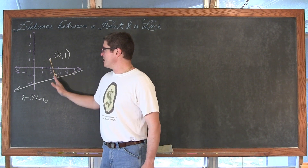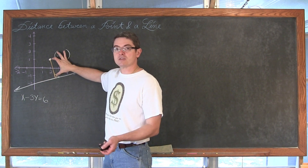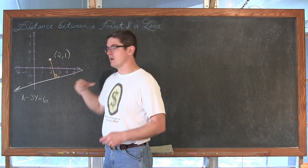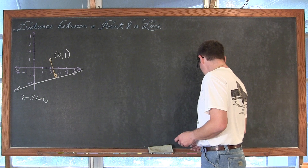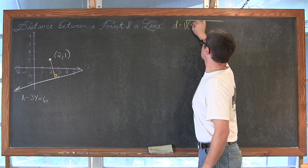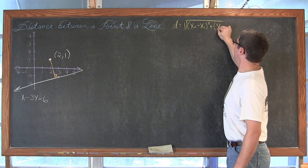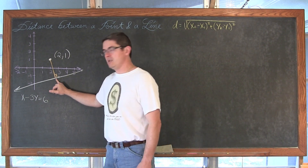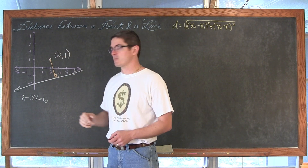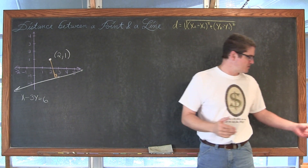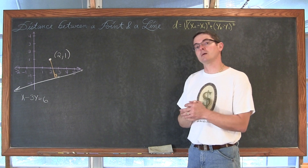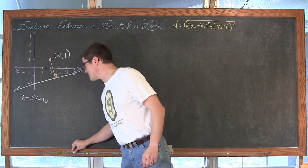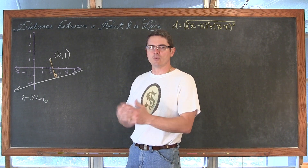What we are going to do is find the equation of the line that contains the perpendicular segment from the point to the given line. The distance formula is equal to the square root of (x₂ minus x₁)² plus (y₂ minus y₁)², and it requires you to know two points, but we are only given one. So we need to find the point of intersection between the perpendicular line and the original line, which is where systems of linear equations come in. I need to find the equation of a line perpendicular to the given line.